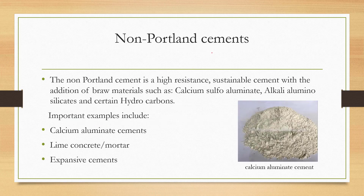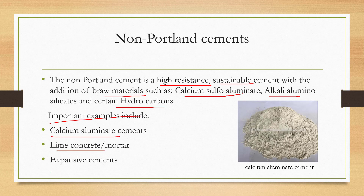Non-Portland cement is a high-resistant, sustainable cement with the addition of brown materials. These include calcium sulfoaluminate, alkali alumino sulfates, and certain hydrocarbons. Important examples include calcium aluminate cement, lime concrete or mortar, and expansive cement.